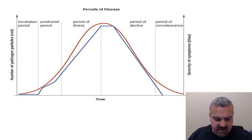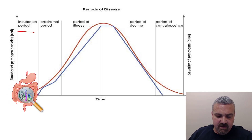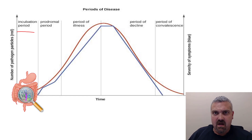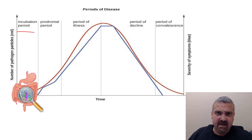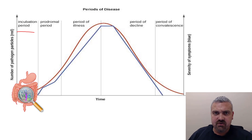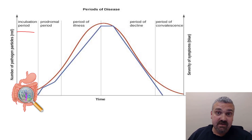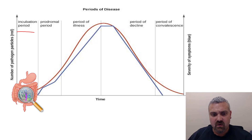First, on the far left here, we have the incubation period. This is a period of time when you were infected, but you don't have a disease. You've been colonized by an organism — it's increasing in number, but you're not actually sick yet. This could be as short as a few hours for something like cholera, maybe a day or two for the common cold, two or three days for influenza, five years for leprosy, up to ten years for HIV. So this incubation period can be very, very long or very, very short.